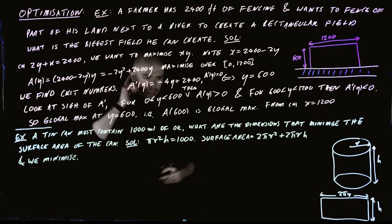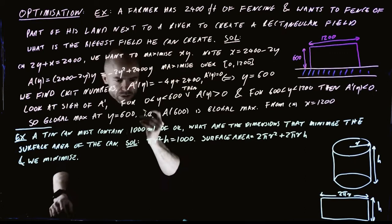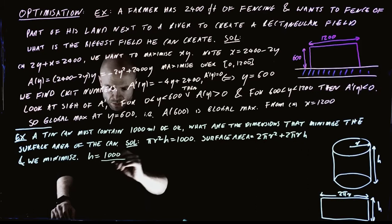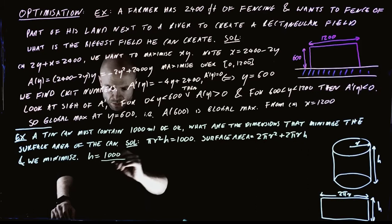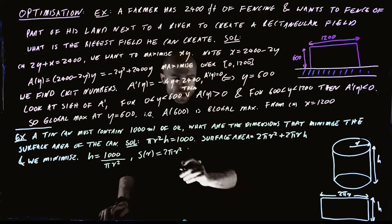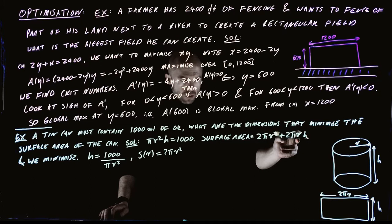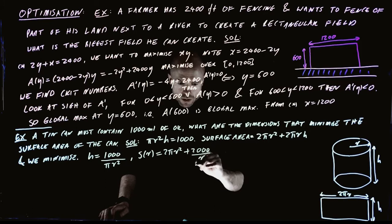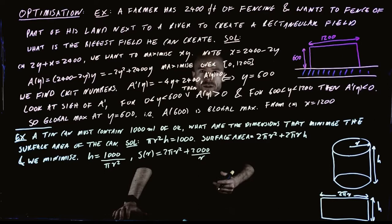This is a function of two variables, but we have a constraint. We can solve for h: h equals 1,000 over pi r squared. Substituting into the surface area formula, one pi and one r cancel, giving S(r) equals 2 pi r squared plus 2,000 over r. That is the function we want to minimize.